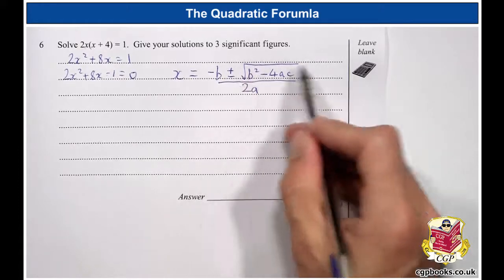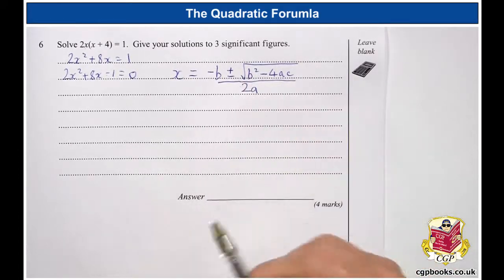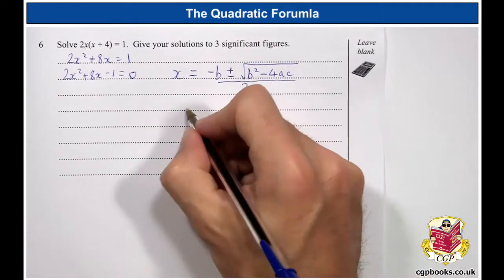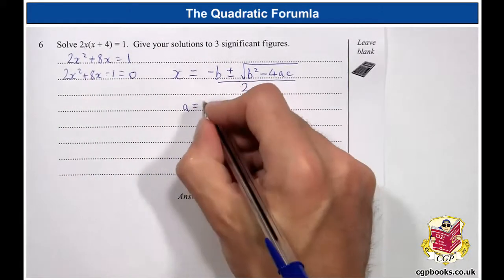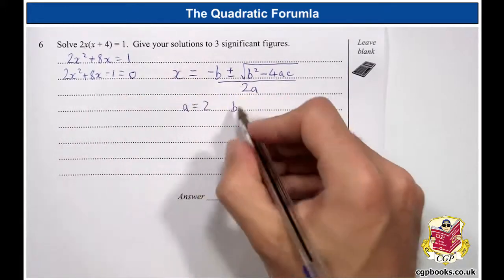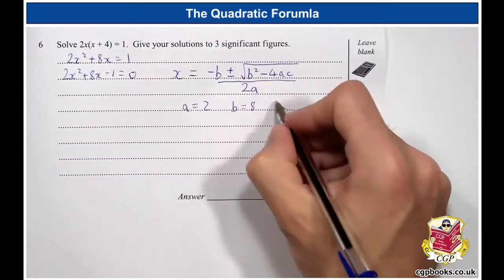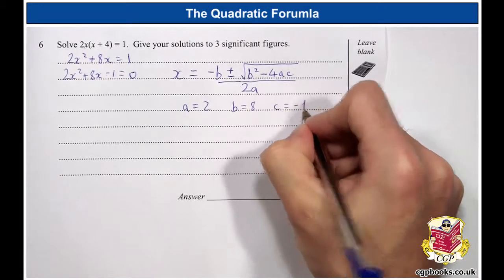So, minus b plus or minus the square root of b squared minus 4ac over 2a. And now we can write down the values of a, b and c for our particular equation. a is 2, b is 8, c is minus 1. And there we go.